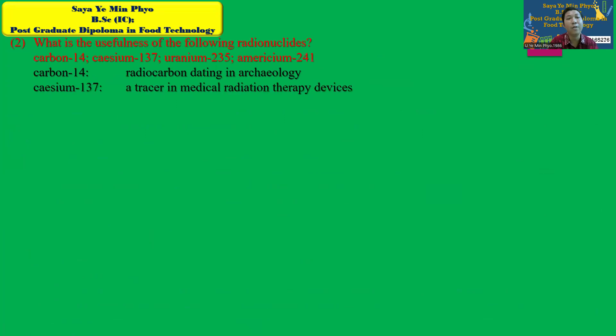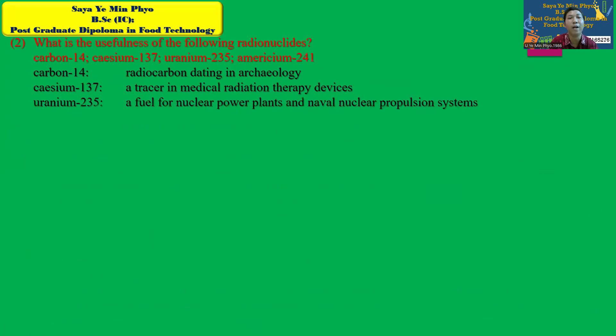Carbon-14 is used for radiocarbon dating in archaeology. Cesium-137 is used as a tracer and in medical irrigation. Uranium-235 is used for nuclear power plants, ships, and nuclear propulsion systems.